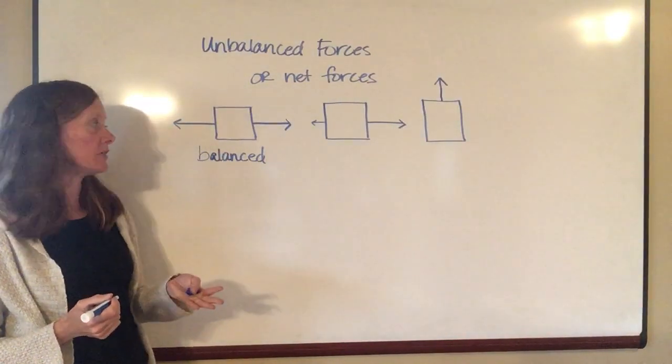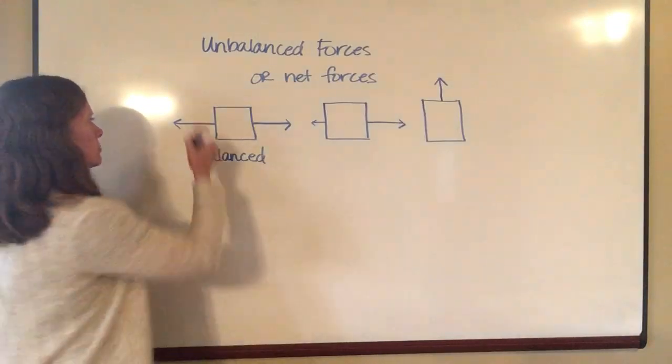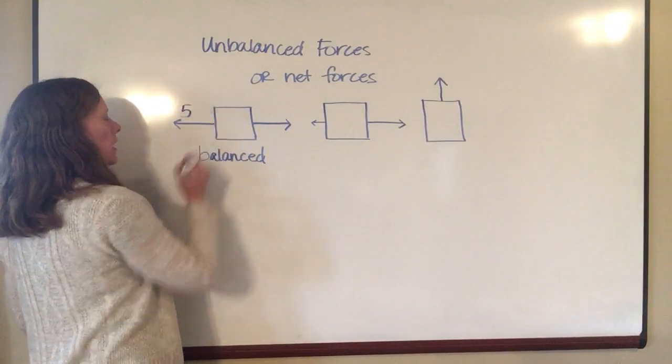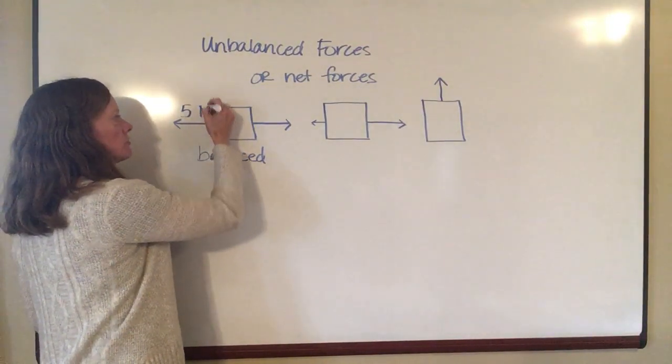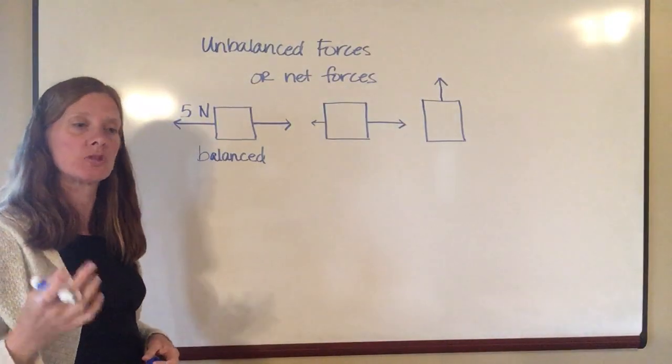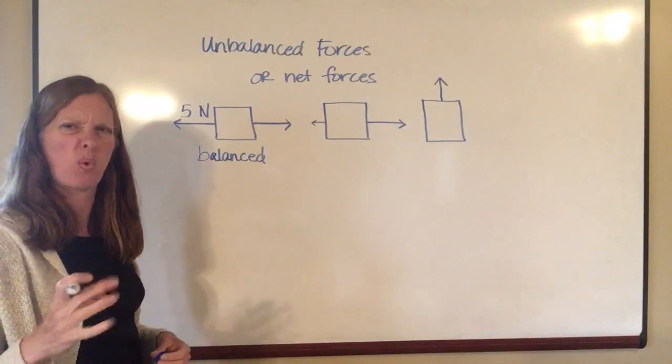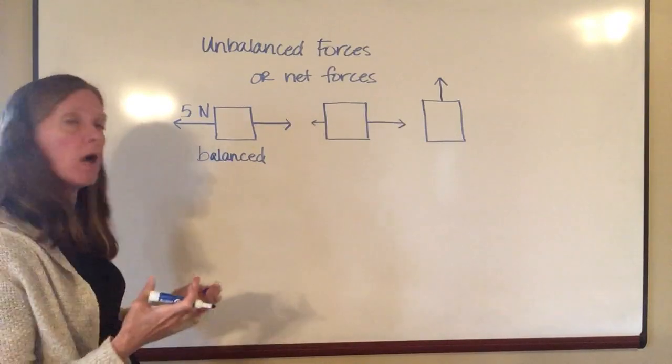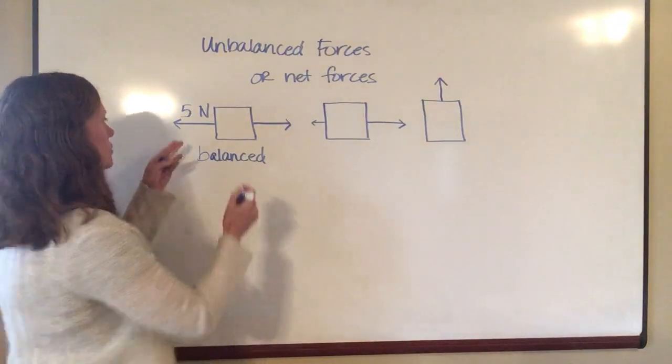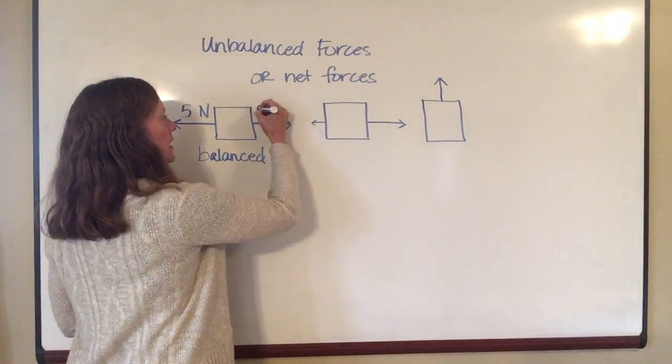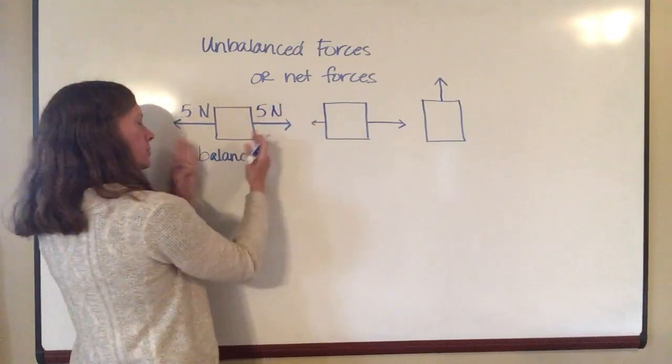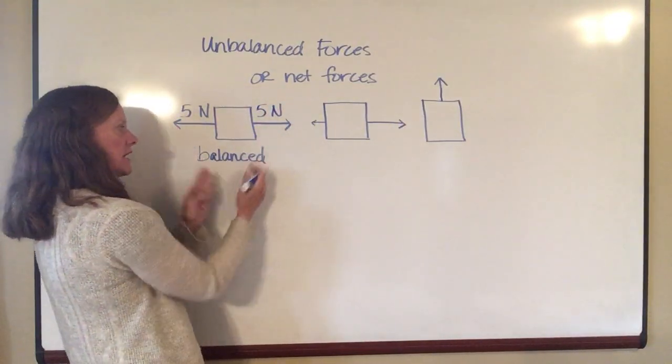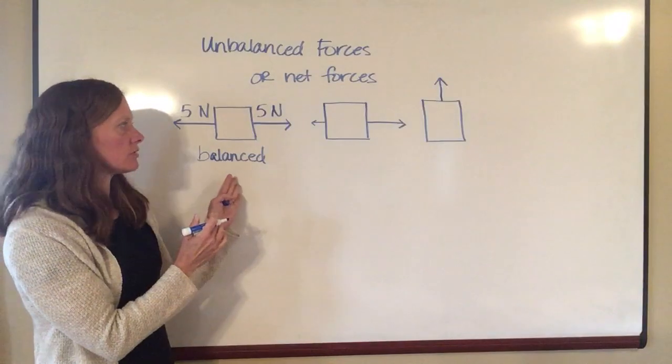So if I have a force of 5 newtons, and newtons is the unit for force, and we'll go into a little bit more detail on what a newton is and where we get that unit from, but for today just accept it. So if I've got 5 newtons going this way and 5 newtons going this way, the forces are balanced, and so there's not going to be a change in motion on this object.